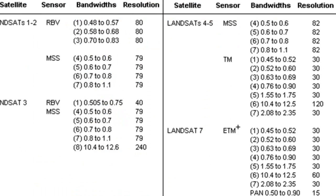By today's standards, the sensor on board Landsat 1, 2, and 3 — the Multi-Spectral Scanner — was a fairly crude sensor. It had about an 80-meter pixel size, and the radiometric resolution was only 6 bits, so pixel values ranged from 0 to 63.